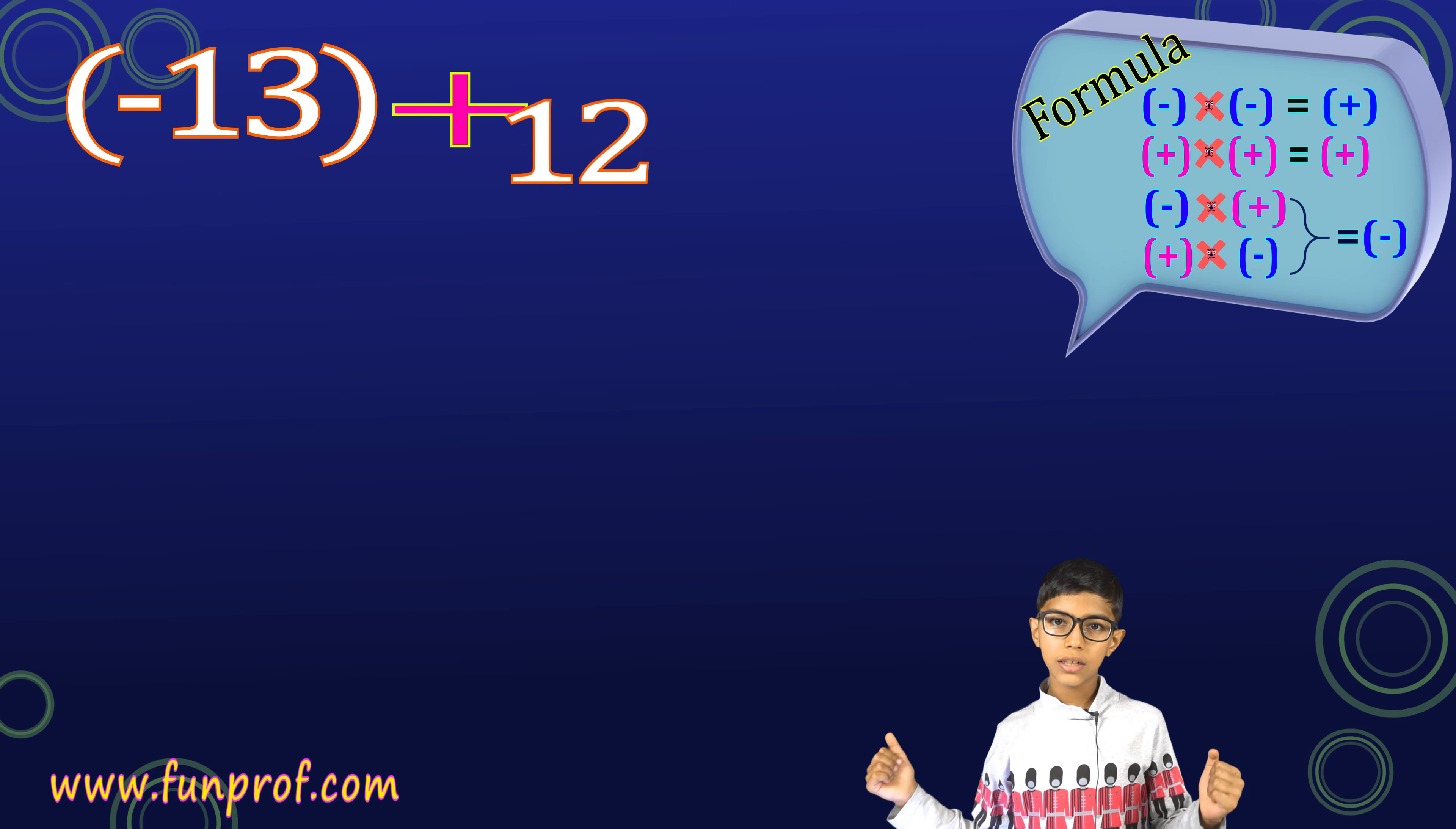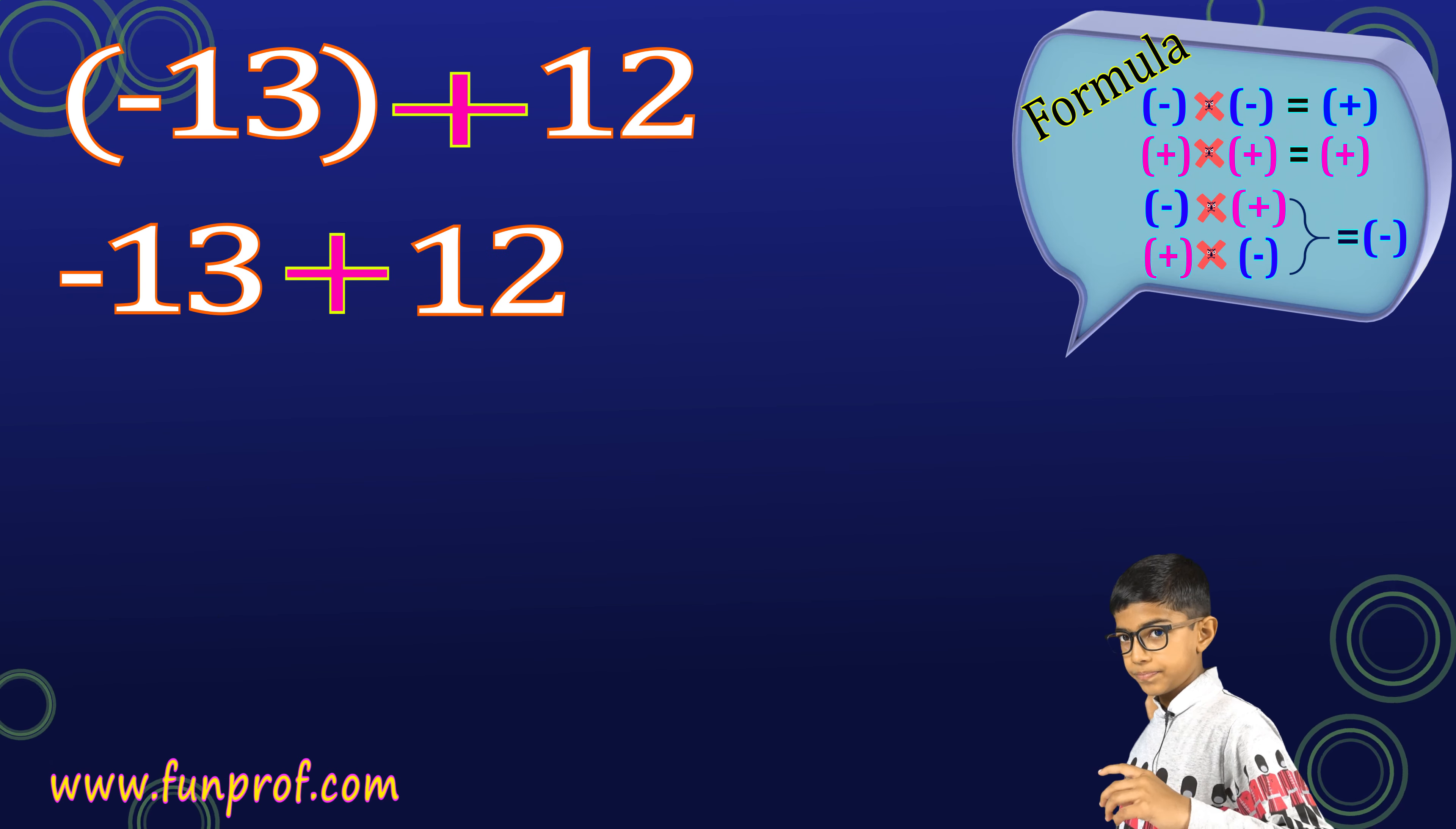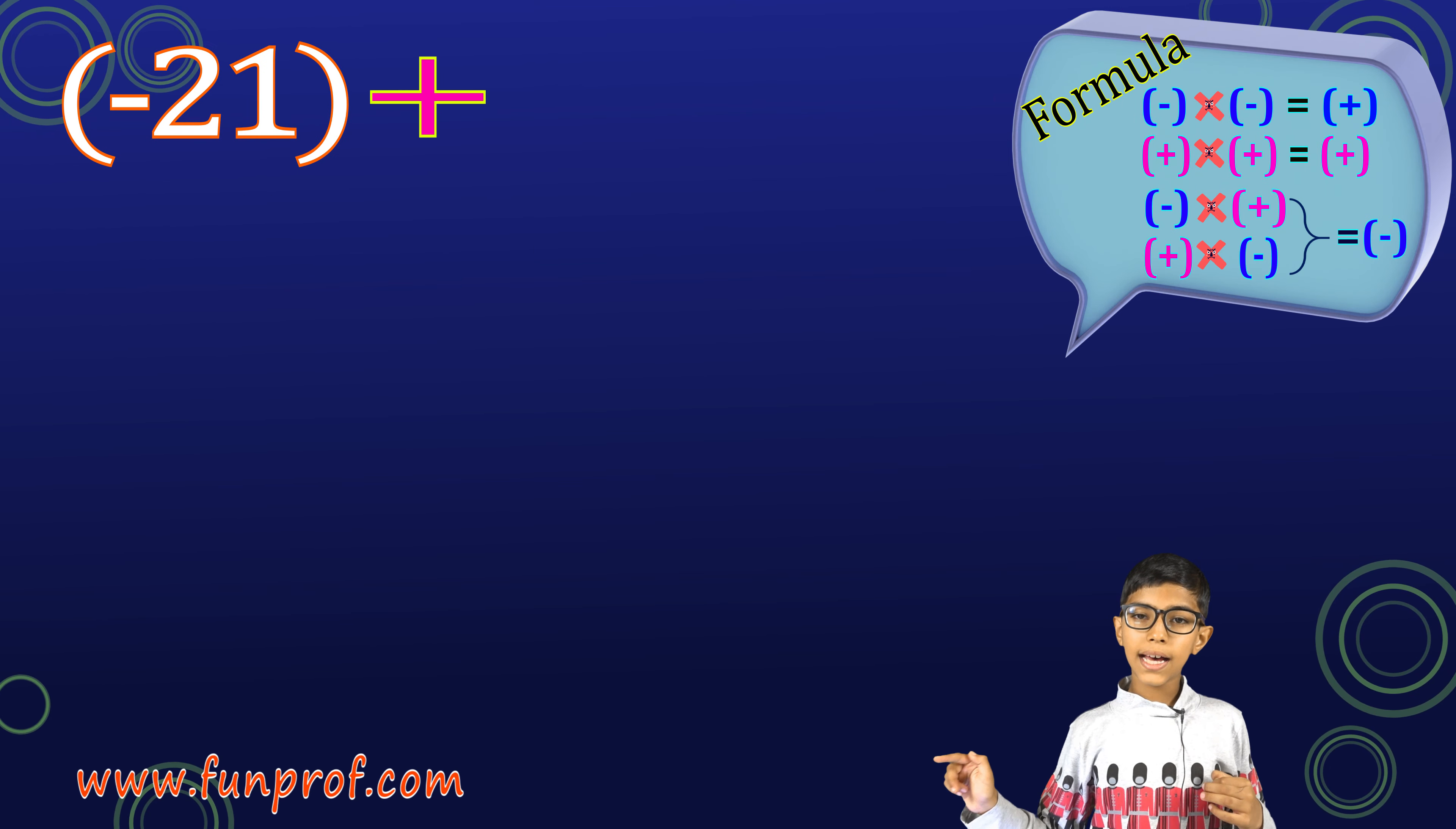Now, we have done the formula. We go to examples. Minus 13 plus 12. We are on minus 13 and we add 12. So, we go to the right of that number. Now, minus 13 plus 12, we get minus 1. Was this simple?